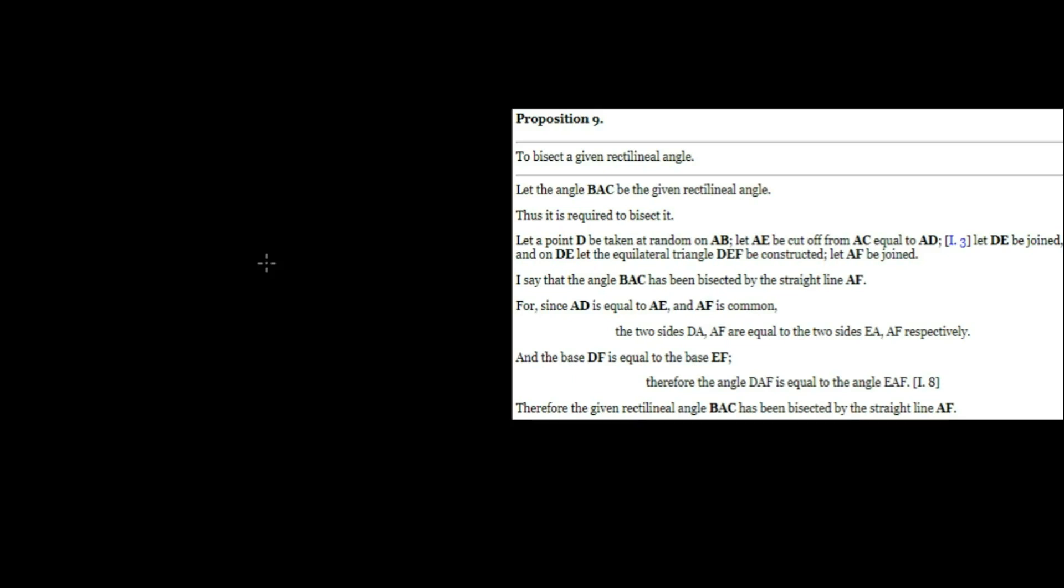In Proposition 9, we're going to show how to bisect an angle using ruler and compass. Let's check this out.